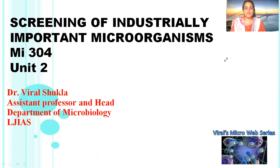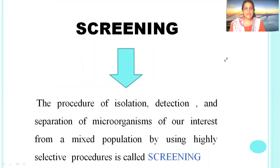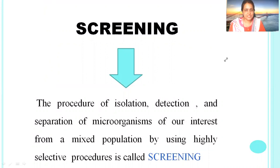These are the criteria for the selection of an organism. Then we have to go for screening. Screening is a procedure of isolation, detection, and separation of a microorganism of our interest from a mixed population by using highly selective procedures.